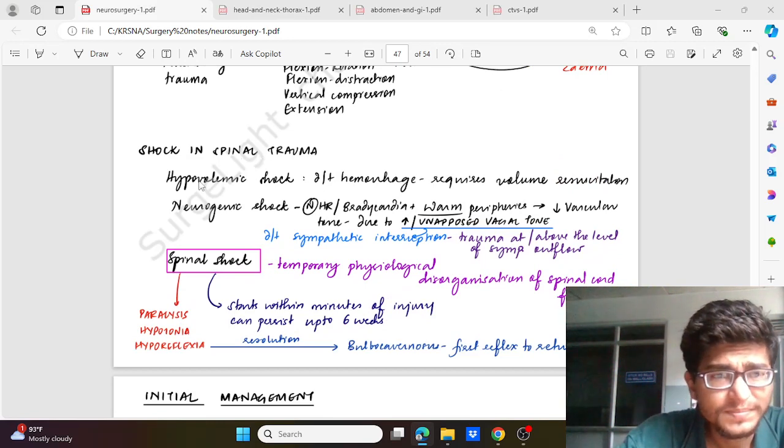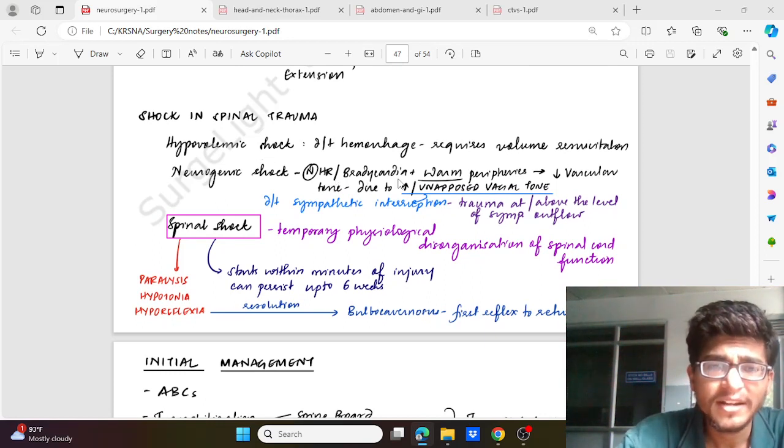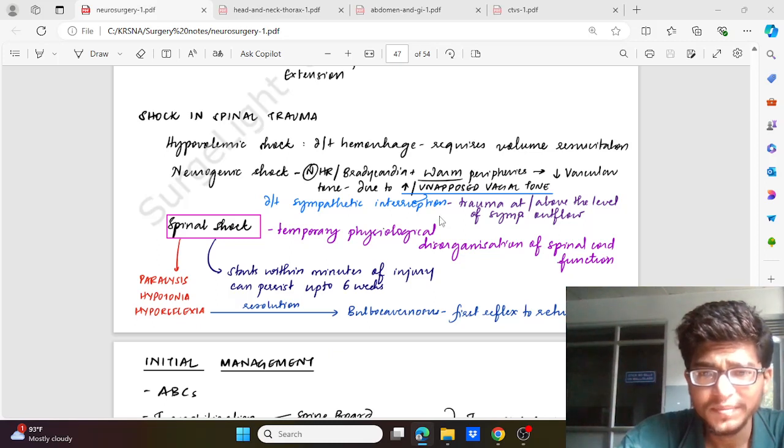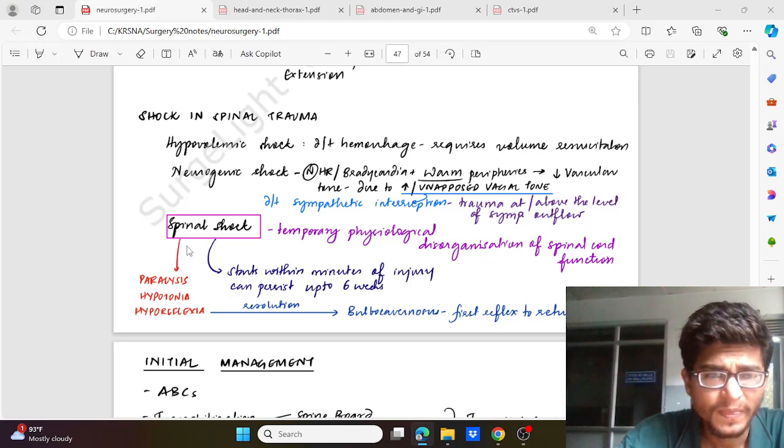Considering shock in spinal trauma: hypovolemic shock due to hemorrhage requires volume resuscitation. Neurogenic shock results in either normal heart rate or bradycardia, warm peripheries, decreased vascular tone due to increased or unopposed vagal tone. It is due to sympathetic interruption; there is increased vagal tone, and generally trauma is at or above the level of the sympathetic outflow. In spinal shock, there is temporary physiological disorganization or block of the spinal cord function which starts within minutes of injury and can persist up to six weeks. There occurs paralysis, hypotonia, and hyporeflexia which resolves over time up to six weeks. The first reflex to return is bulbocavernosus reflex.